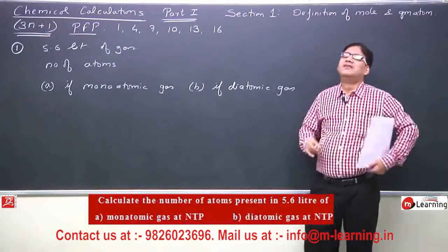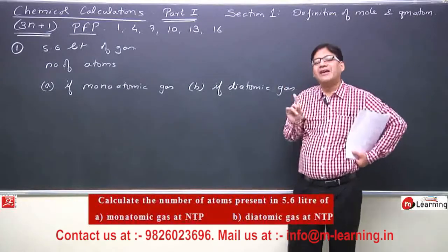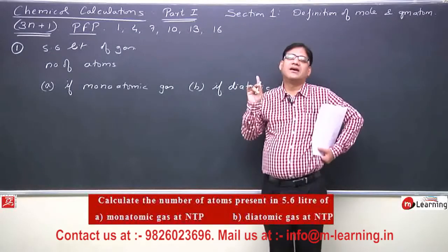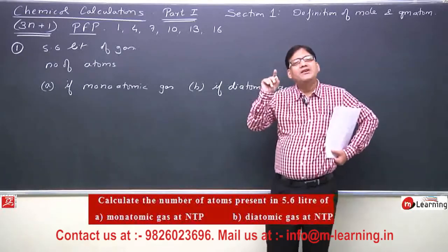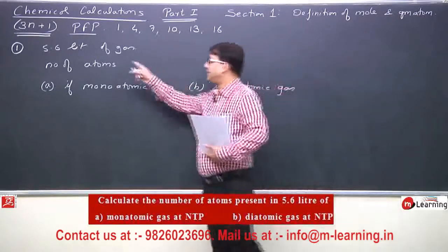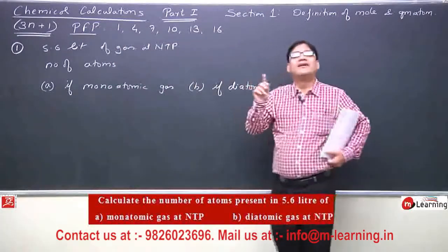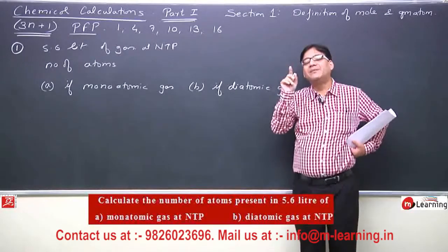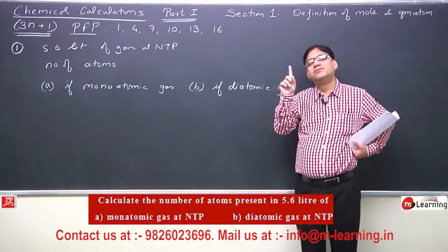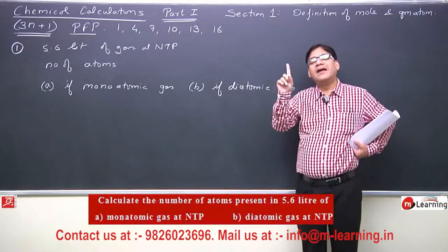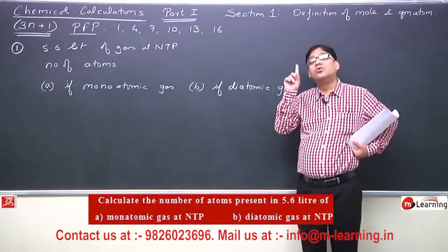This problem involves the application of Avogadro's hypothesis for gases. The concept involved: 22.4 liters of gas at NTP is termed as 1 mole of gas. So 1 liter of gas at NTP would be 1/22.4 moles, and 5.6 liters of gas would be 5.6 upon 22.4 moles.